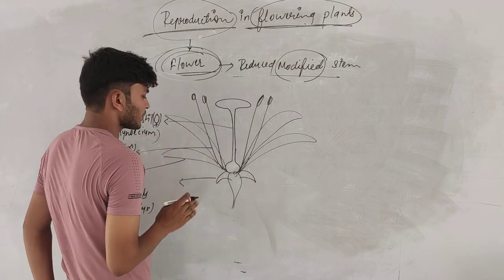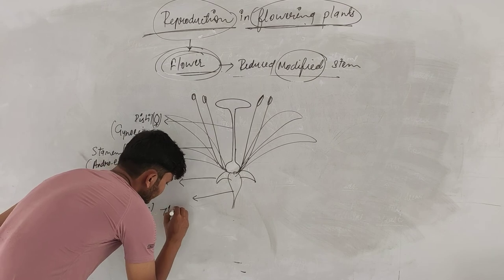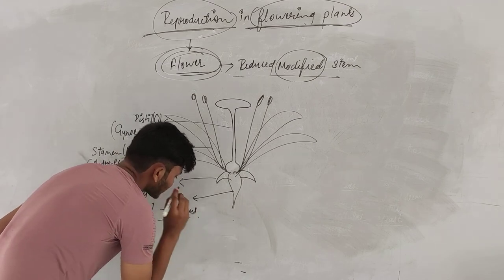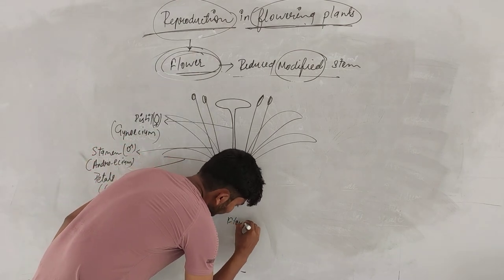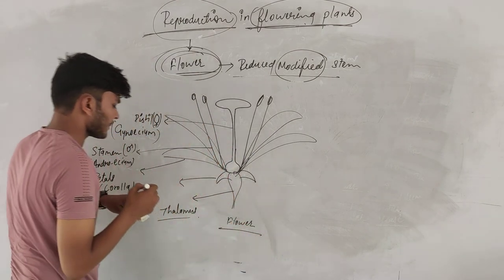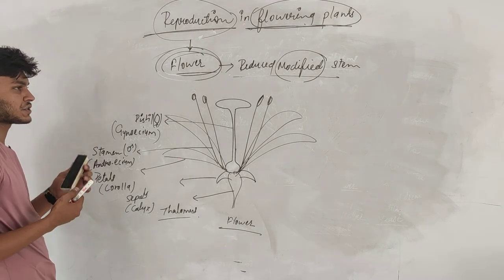Yee saari structure, yee structure ke arranged hota hai, kapta lai structure ke ope sme bolte hai thalamus. That structure is known as thalamus. This is the structure of flower. Flower basically chaar part se unke bana hota hai. Outermost is sepal, then petal, then stamen, and then pistil.